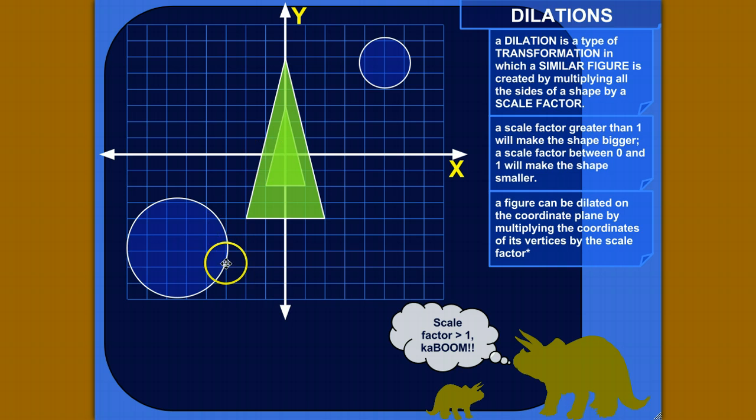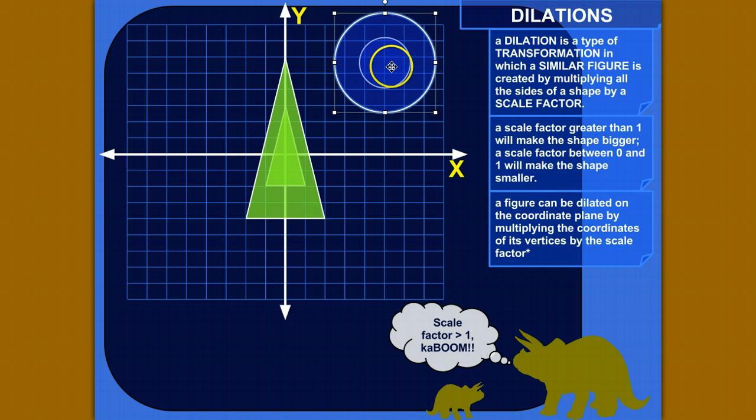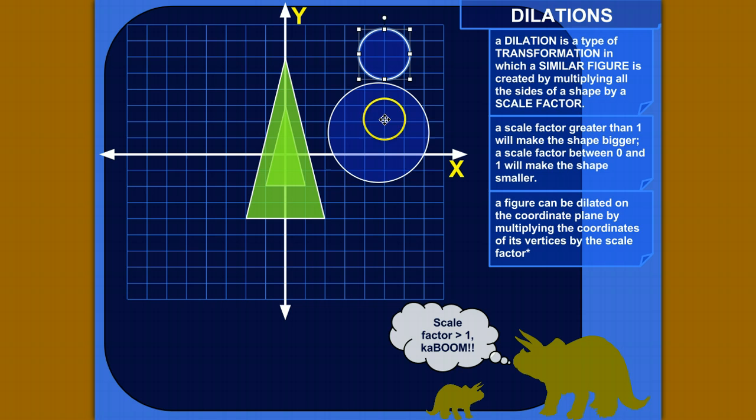It's called dilation, it means the same thing, where it's just the same shaped thing is expanded, like this. If this were dilated, it would become like this.